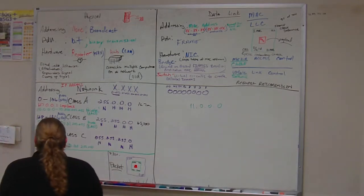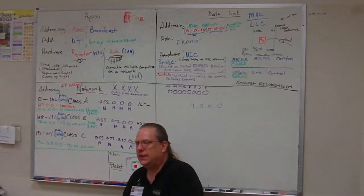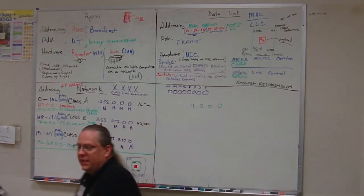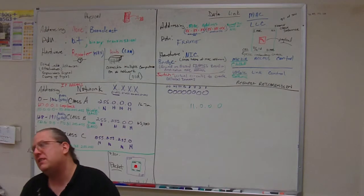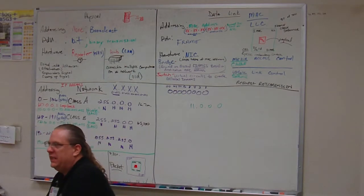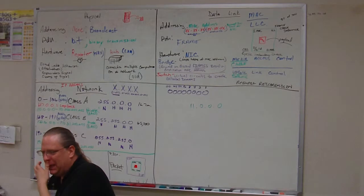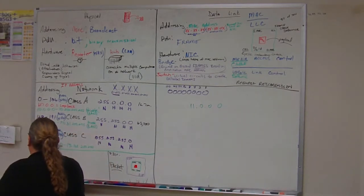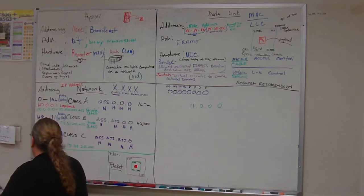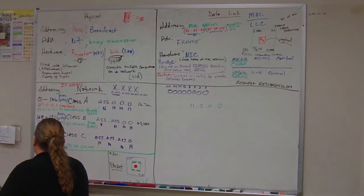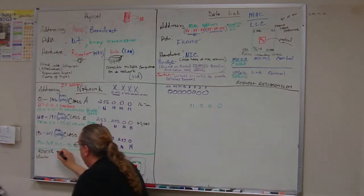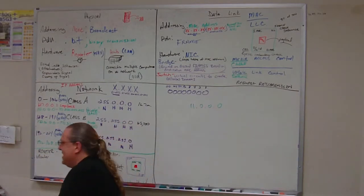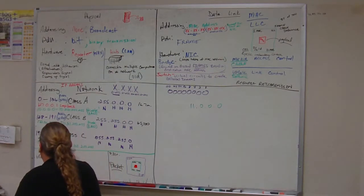Now, the last one is, what is the hardware that functions at this layer? And there's actually two pieces of hardware. One is an older one that we don't really use anymore. You might see it in some corporate places, but not really. And then, of course, the more important one. So, the more important one is called a router. The one that we don't really use anymore is called a brouter, with a little B on the front.